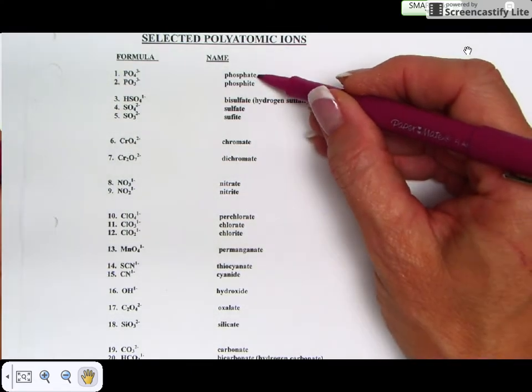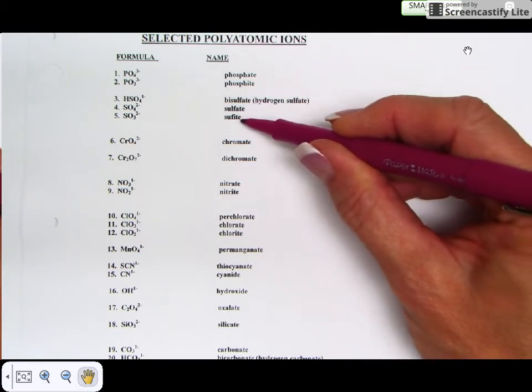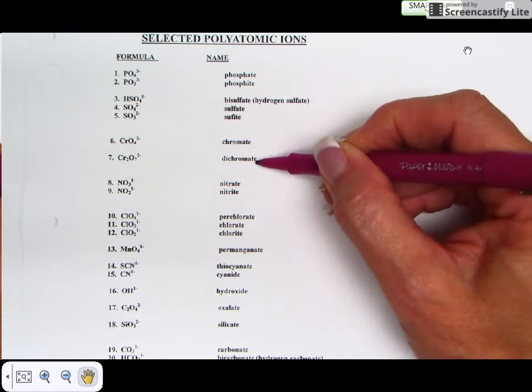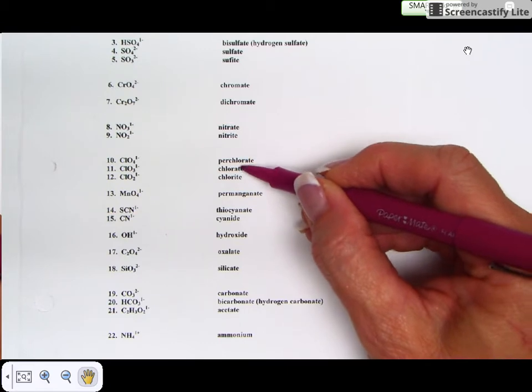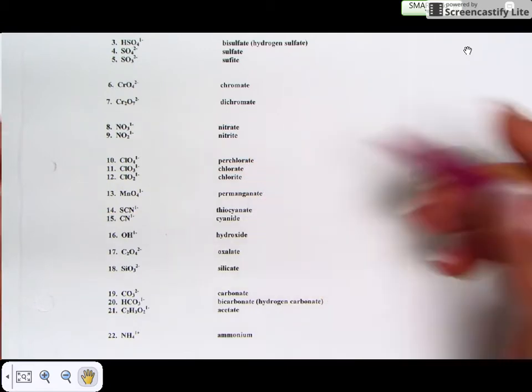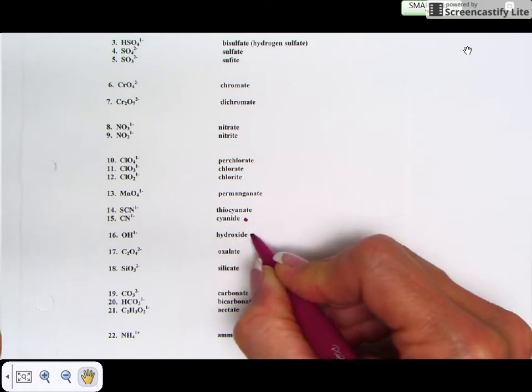Most of your polyatomics are going to end in -ate or -ite. Notice phosphate, bisulfate, sulfate, chromate and dichromate, nitrate, nitrite. As you go down they end in -ate or -ite. Now there are two that I gave you that do not: cyanide and hydroxide.